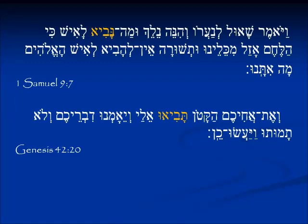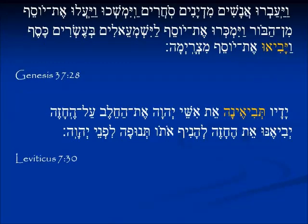In Genesis 42:20, Joseph is telling his brothers: v'et achichem hakaton taviyu elai — and your young brother you will bring to me. Again from the story of Joseph, in Genesis 37:28, here come the Midianites — they pull Joseph up out of the pit, pay twenty shekels of silver, and v'yaviyu et Yosef Mitzrayimah — they brought Joseph to Egypt — conjugated in the imperfect but read as perfect because of the vav: v'yaviyu.